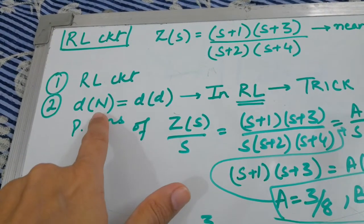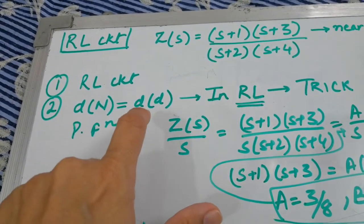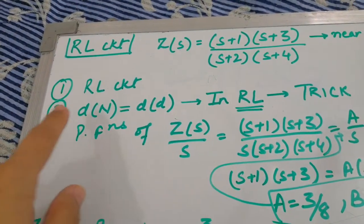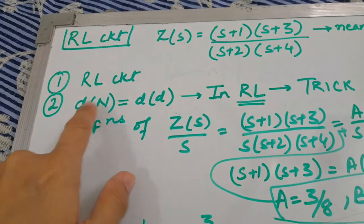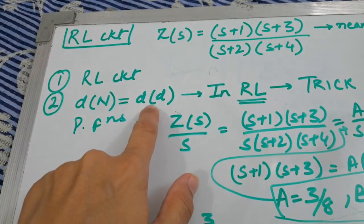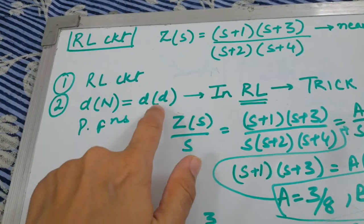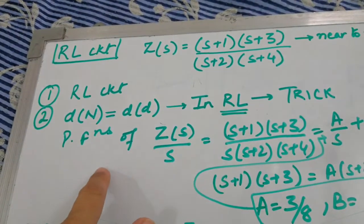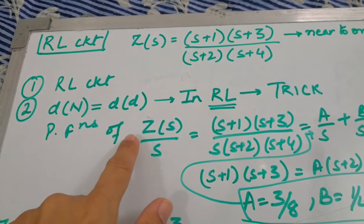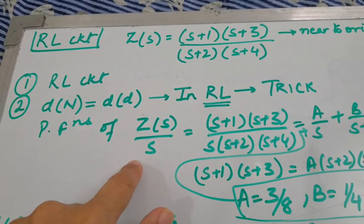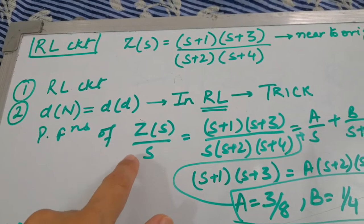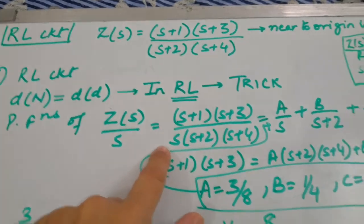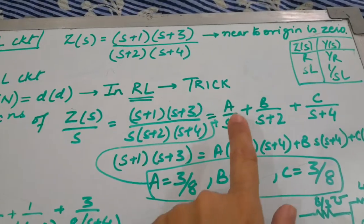The second step is to check for the partial fractions, since we have to first design for Foster forms. For the partial fractions, the degree of the numerator is coming out to be equal to the degree of the denominator. But as this is an RL circuit, a trick comes in Foster 1 form here: we have to take the partial fractions of Z(s)/s instead of one-step CFE as we did in RC circuits.